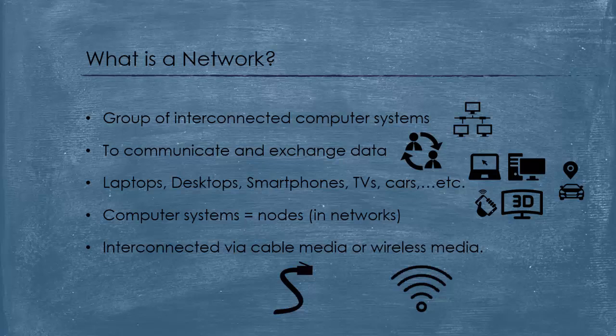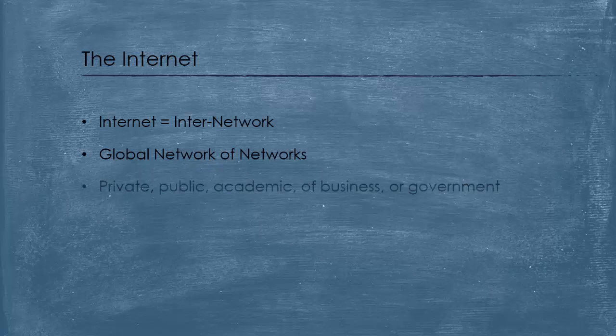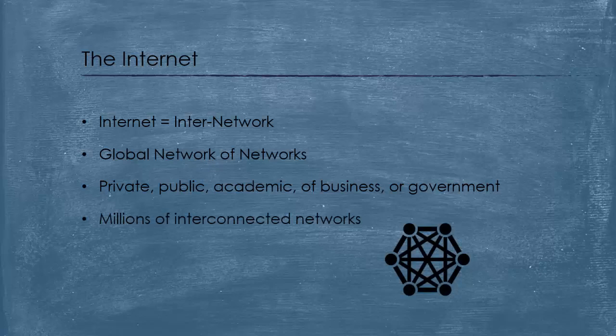So this is what we mean by a network. Now the internet simply, as we said, is a global network of networks. Networks that are either private, public, academic, business, or government. Actually there are millions of interconnected networks out there and that's what makes the internet a global network.